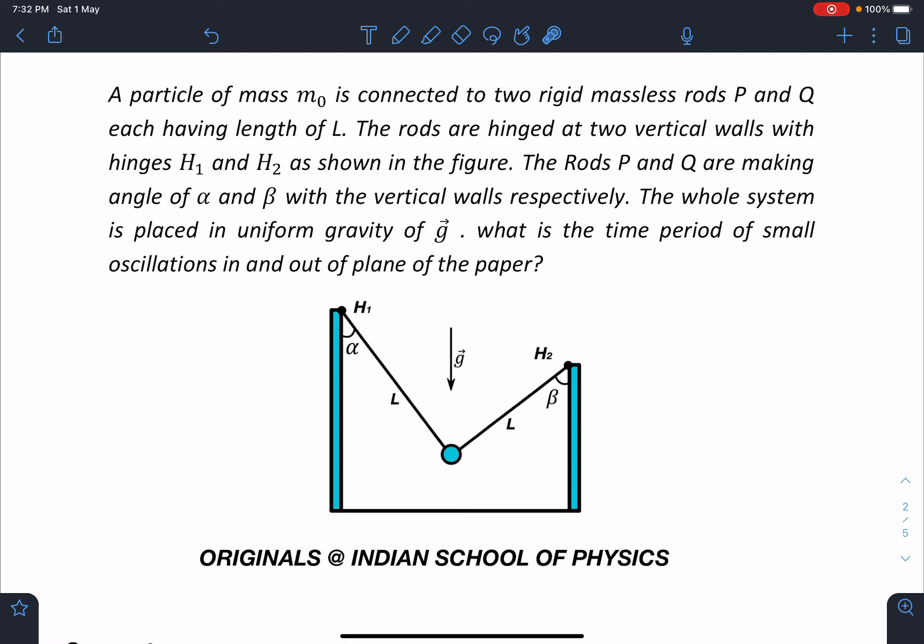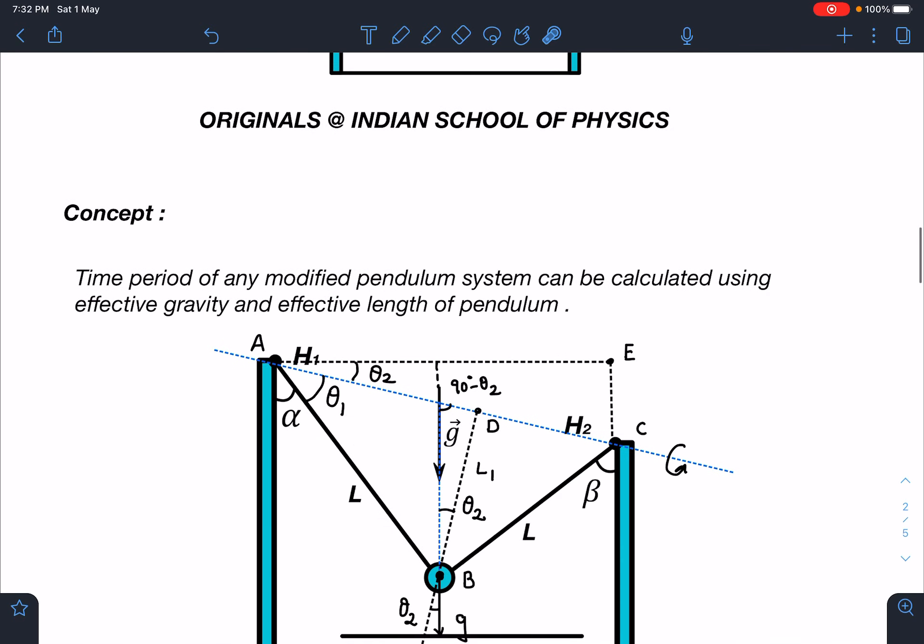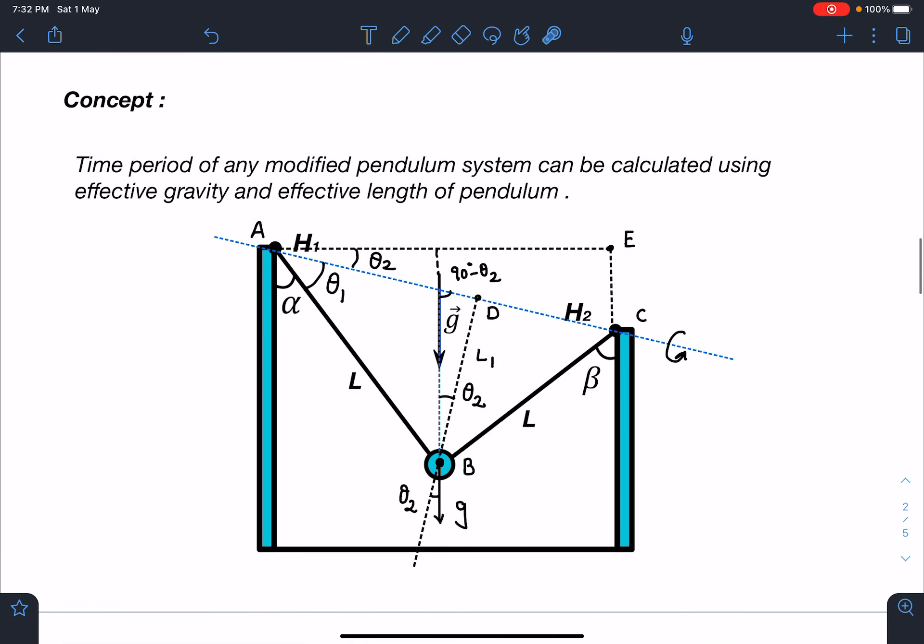Guys, this is an original problem but it is modified from one of the problems of Krotov and it doesn't make any difference whether these rods are given here or threads are given here. In both cases answer remains same. So concept wise we can say time period of any modified pendulum system can be calculated using effective gravity and effective length of the pendulum.